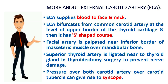Point number one: external carotid artery supplies blood to the face and neck. Point number two: external carotid artery bifurcates from the common carotid artery at the level of the upper border of the thyroid cartilage, and then it has an S-shaped course.